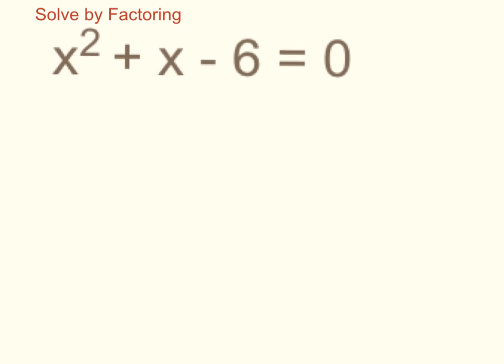To solve by factoring, I want to find factors of the constant term, minus 6, which add up to the x term, in this case, a 1. Because it's just x by itself, that means it's 1x.